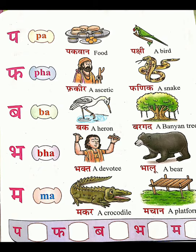Next letter: BA, B-A. 'Baka', B-A-K-A — a heron. Then 'bargad', B-A-R-G-A-D — a banyan tree, B-A-N-Y-A-N T-R-E-E.